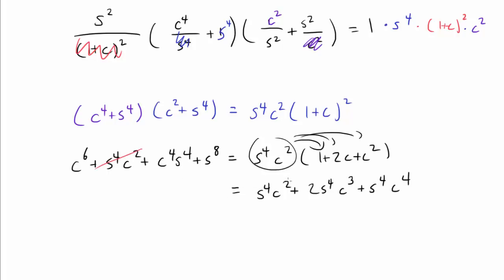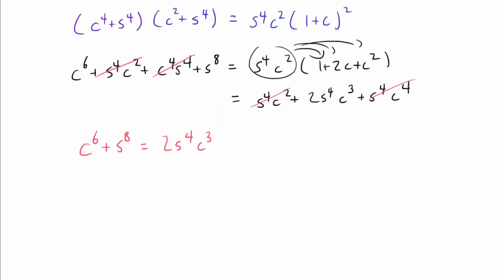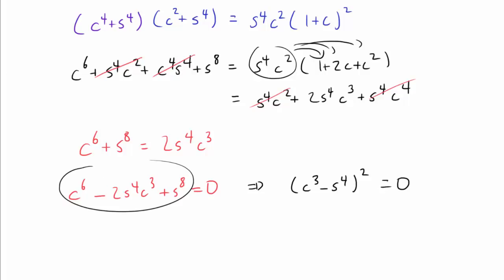Right away, we see s⁴c² cancels from both sides, and c⁴s⁴ cancels as well. So we have c⁶ + s⁸ = 2s⁴c³. Moving the right side over, we recognize this as a perfect square: (c³ − s⁴)² = 0, which implies c³ = s⁴, i.e., cosine³(x) = sine⁴(x).